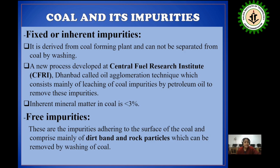As we all know, CFRI — Central Fuel Research Institute, Dhanbad — has adopted a new technique called oil agglomeration technique, which is mainly leaching of coal for the impurity. They do it by using petroleum oil to remove the impurity. Mostly the inherent impurity matter in coal is less than 3%. And what is free impurity?